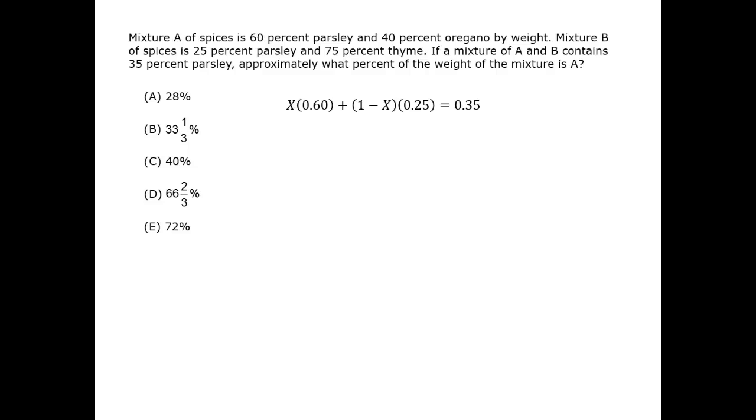Notice that as x approaches 100%, the left side would approach 60%, purely mixture A, purely 60% parsley. Whereas as x approaches 0, that first term on the left would approach 0 and the second term would take over, and we would have 25% parsley because we would have fully mixture B. In point of fact, x is neither 100 nor 0. It's in a balance which yields a result of 35%.